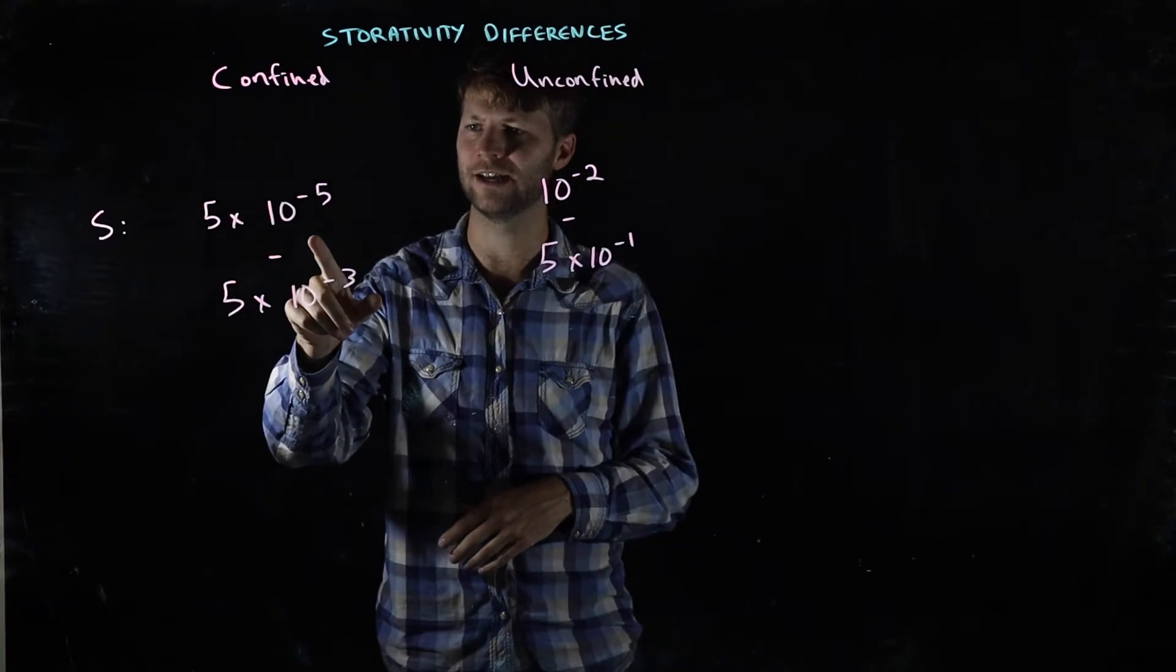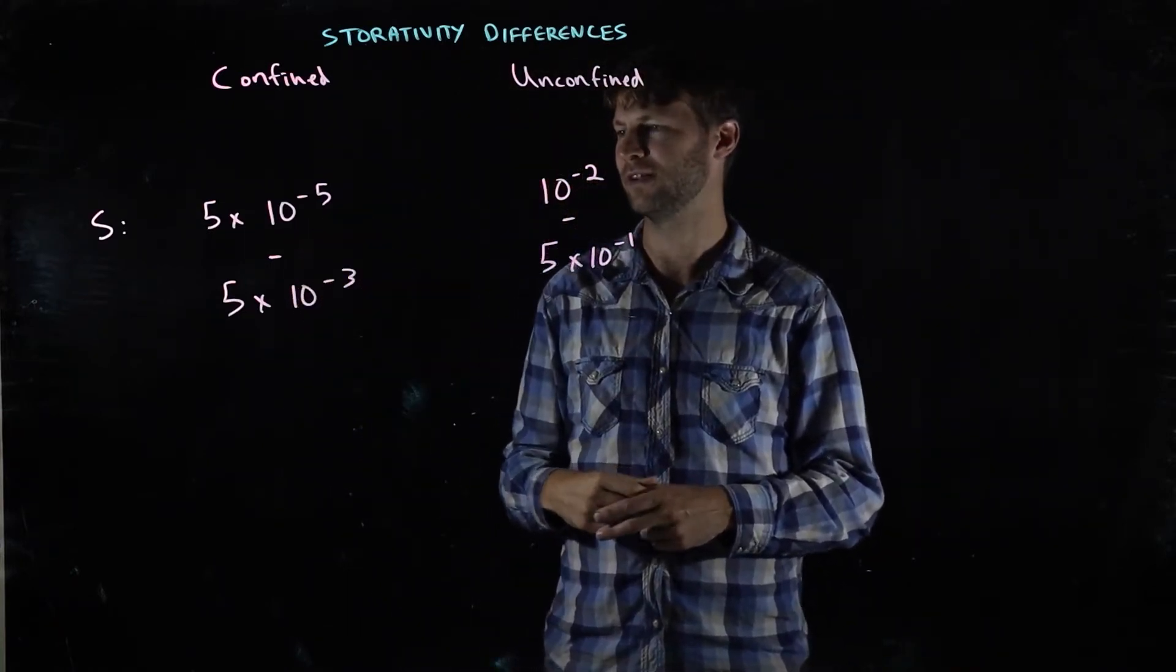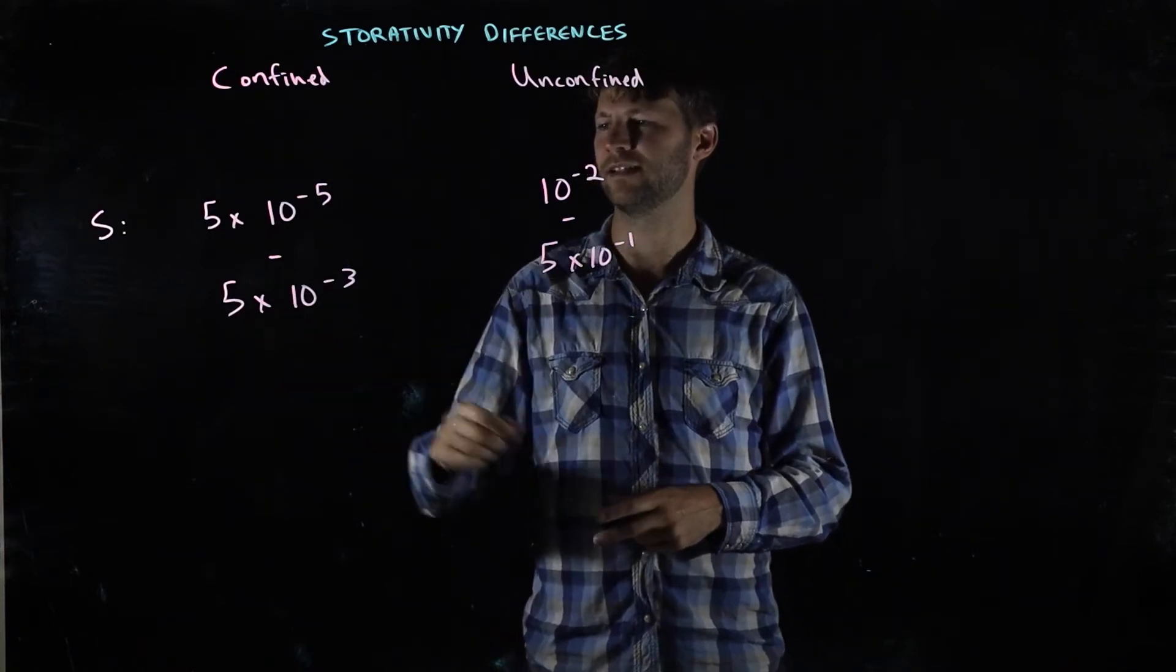In the confined case these values are really pretty small: 5 times 10 to the negative 5 to 5 times 10 to the negative 3.